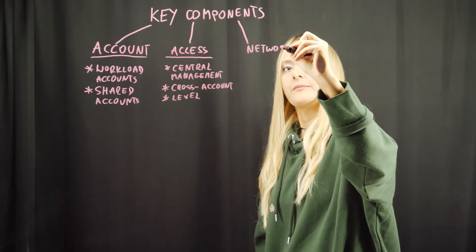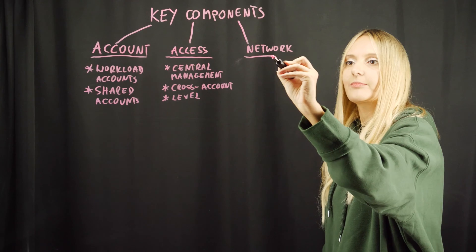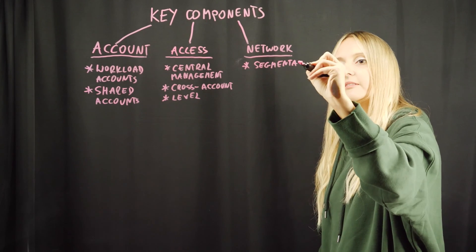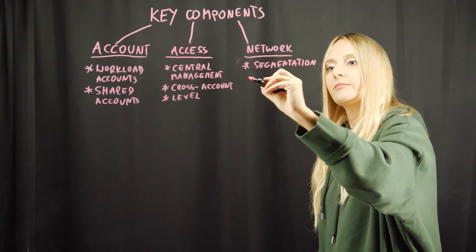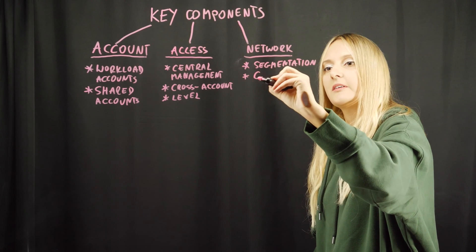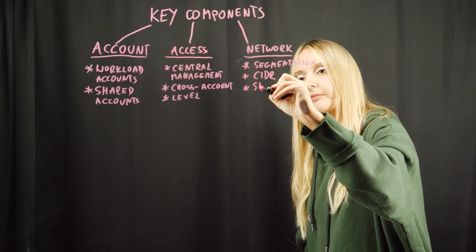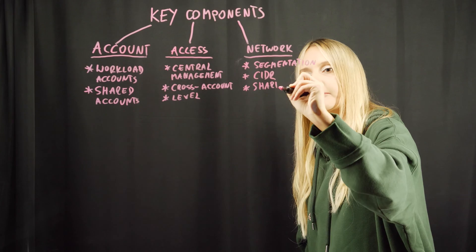Another key component of cloud landing zones is network architecture. There are quite a few things to consider: global network segmentation, as well as CIDR allocation, and how you'd like your network to be shared.